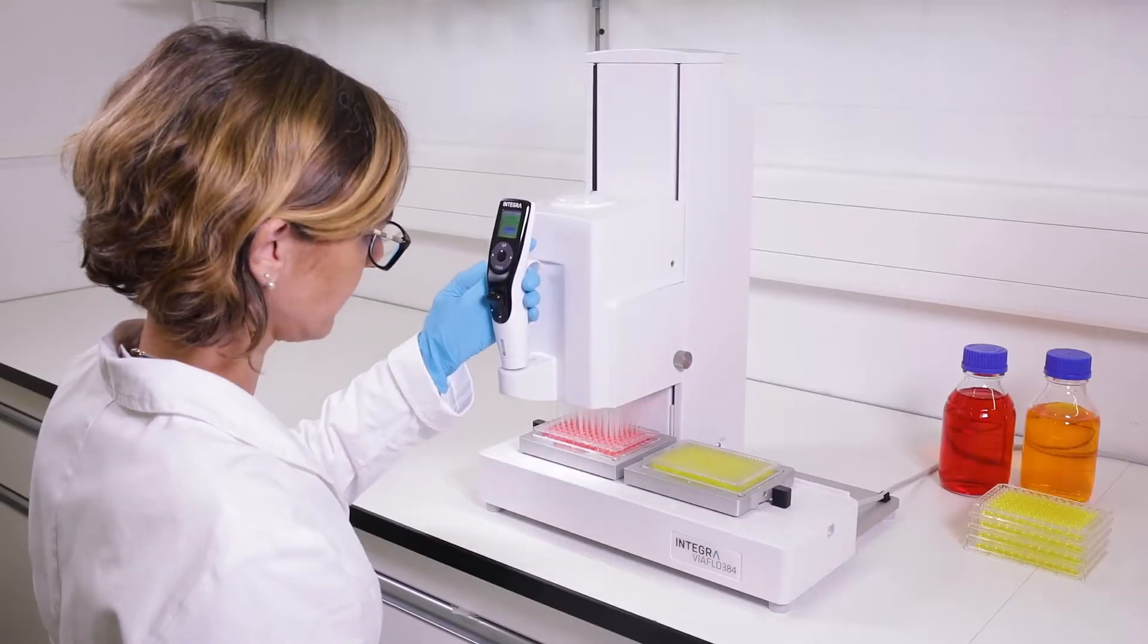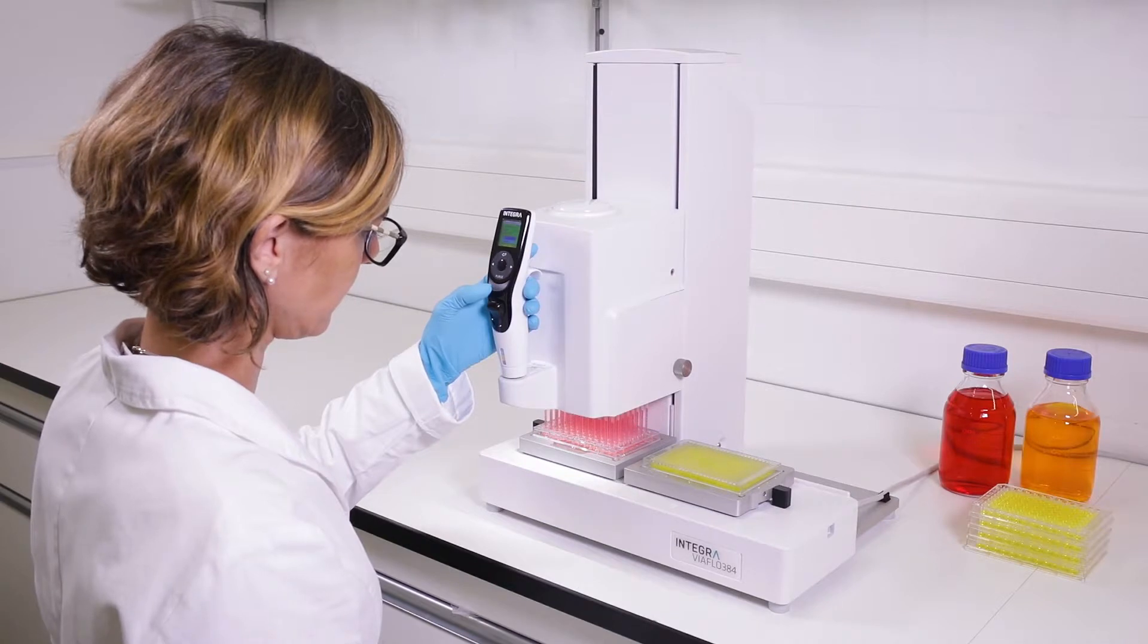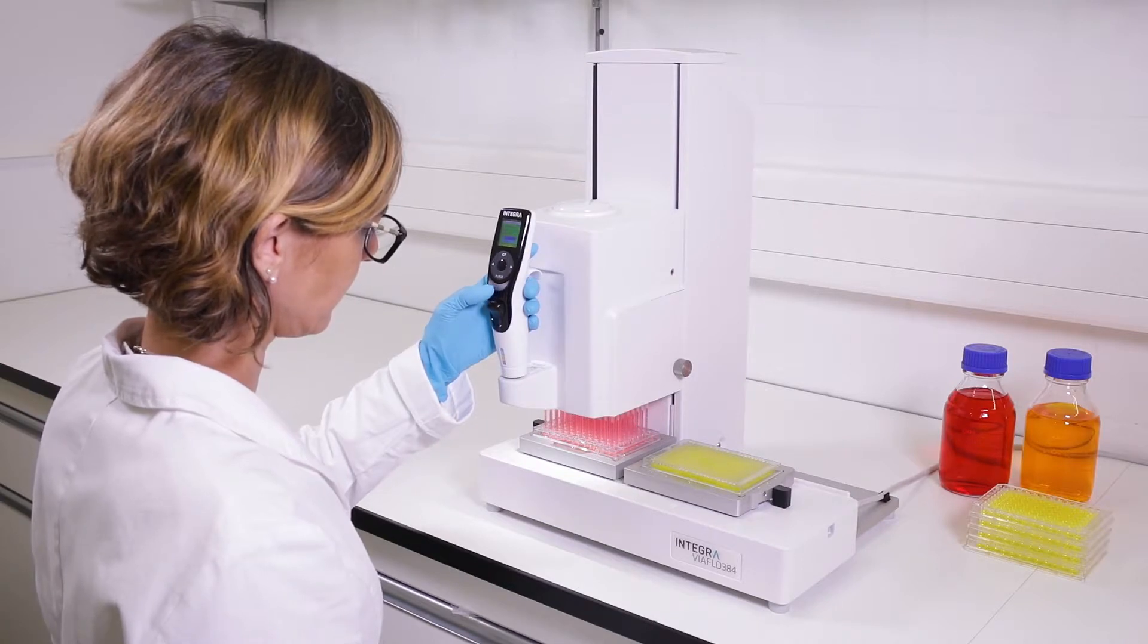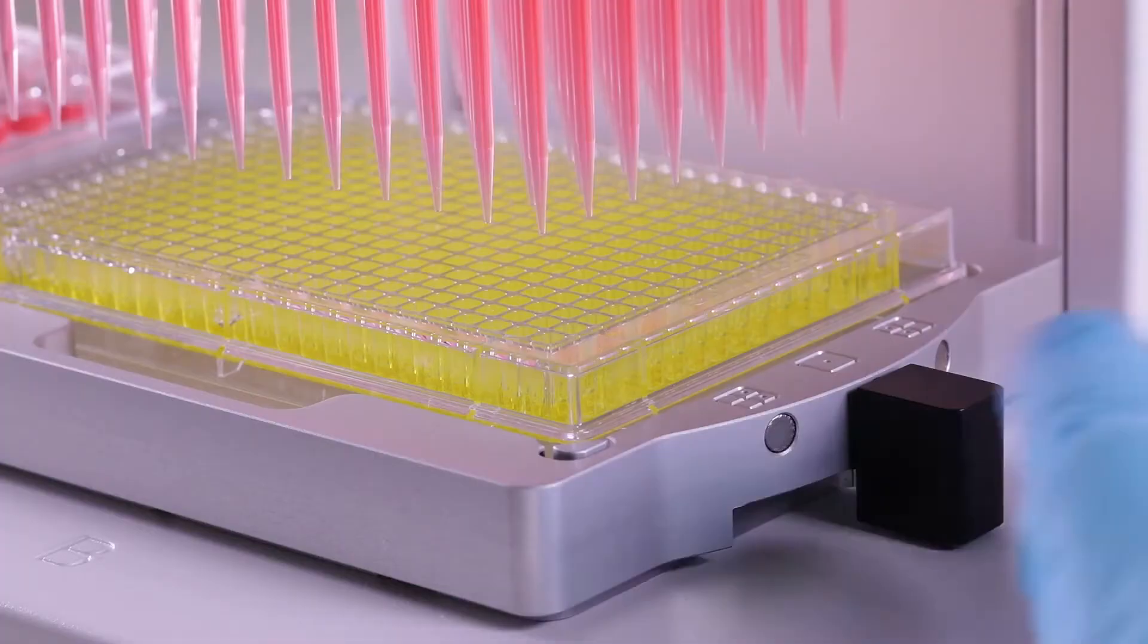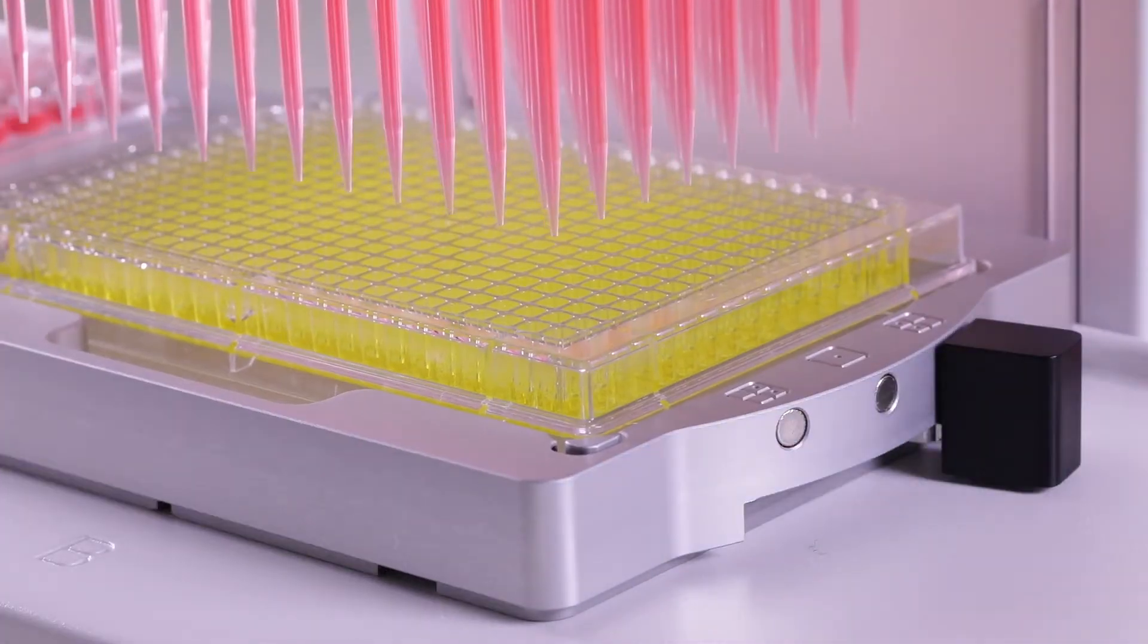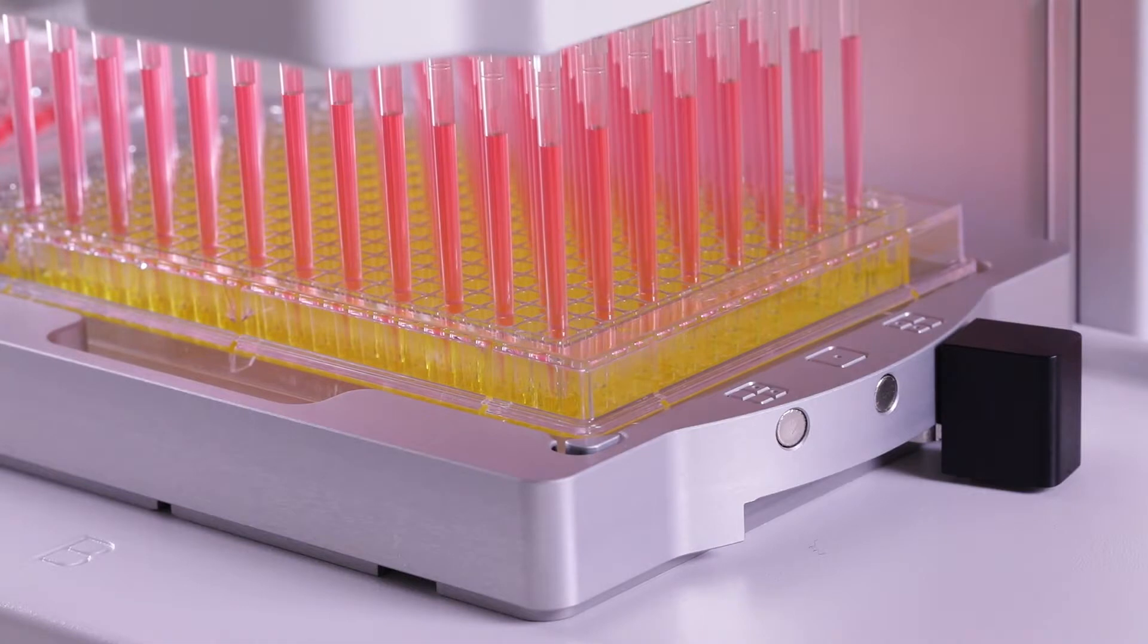Reformatting a 96-well plate into a 384-well plate is incredibly easy, using a 96-channel head. Simply move the lever to the back in order to access the wells in the front of the plate.